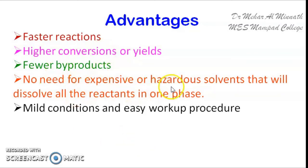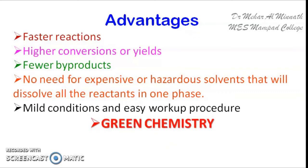Because of all these advantages — particularly the formation of few byproducts and no need for expensive solvents — PTC is especially useful in green chemistry. Instead of an expensive, toxic, or hazardous solvent, we can simply use water for a reaction. The use of toxic hazardous organic solvents can be reduced, making PTC a very good catalyst used in green chemistry.